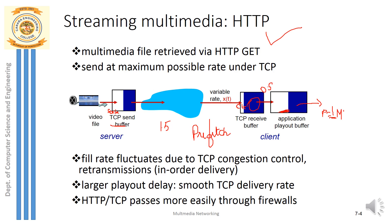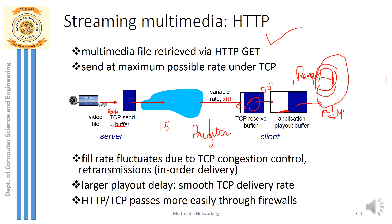In HTTP streaming, a range of bytes can be requested. This means if a user doesn't want to watch from the beginning, they can request a specific range — for example, only the middle frames of the video, skipping the beginning and climax. This option is similar to what we experience on YouTube.